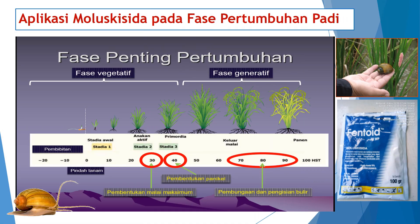Aplikasi moluskusida yang tepat pada fase pertumbuhan padi yaitu sebaiknya diaplikasikan pada saat pembibitan sehingga bibitnya tidak terkena serangan keong, kemudian sawah diracuni dengan racun keong pada saat pindah tanam, sehingga tanaman bisa bertumbuh sampai fase vegetatif dan berkembang dengan baik.